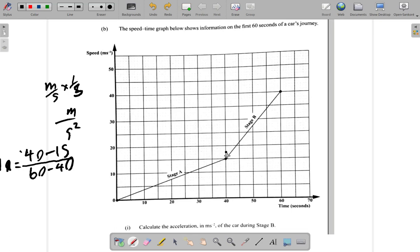It's the same as the gradient of the line. It's the gradient of this line. Rise over run. The change in speed is the rise. 40 minus 15. It rises from 15 to 40. So that change is the rise. And then the change in time horizontally is the run.